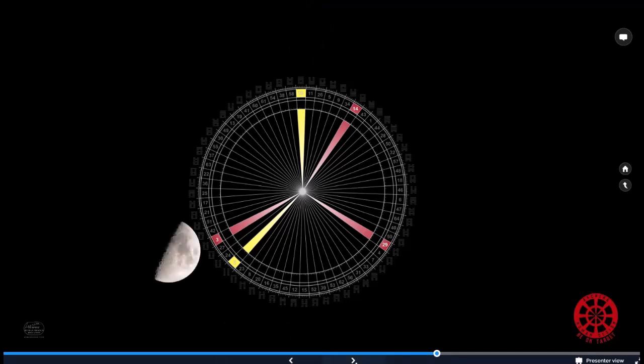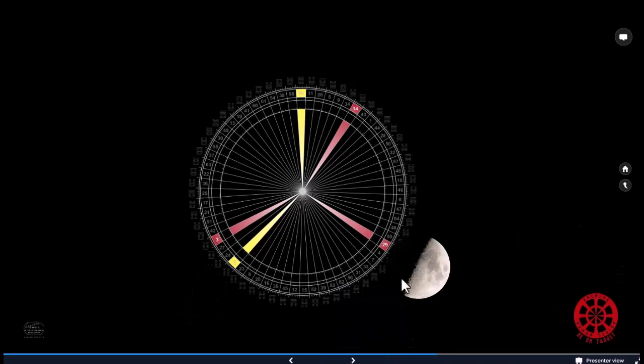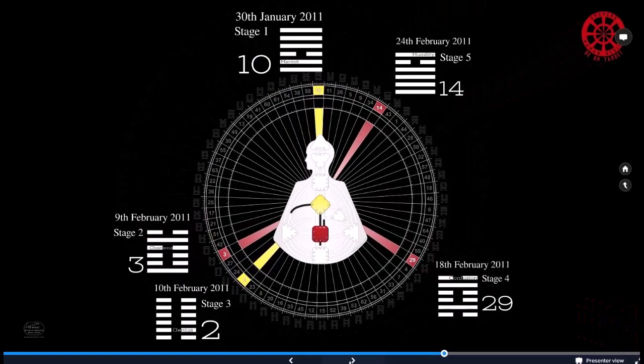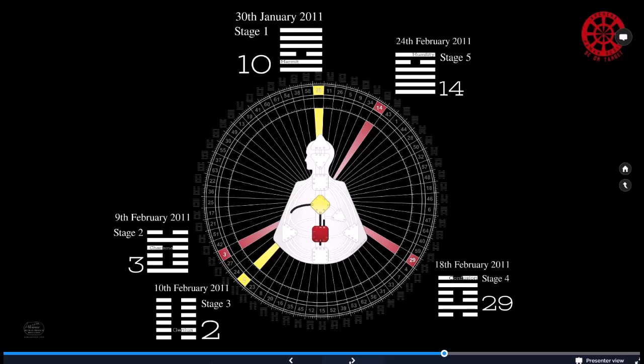And now we have this movement to the three from stage one with the 10 to stage two. We then go into the second gate. And then we go from the second gate to the 29th gate. And then from the 29th gate, we move up to the 14th gate. So we have these stages of the death process that are initiated by that ice moon. So every single person is initiated into the potential of their natural death through this sequence.